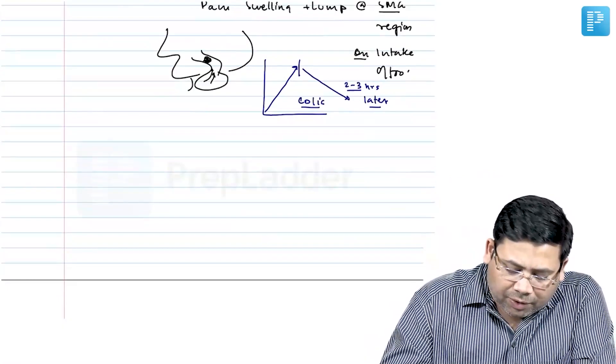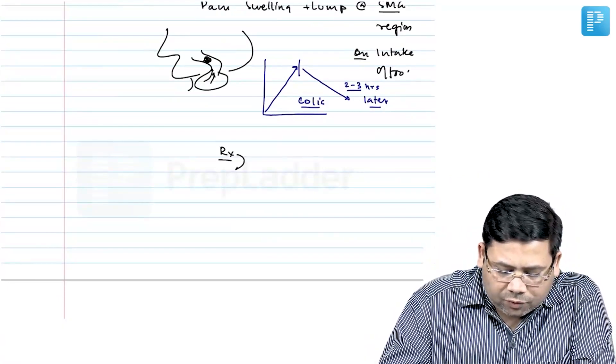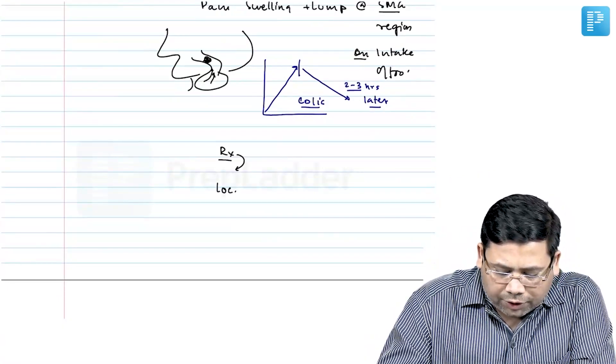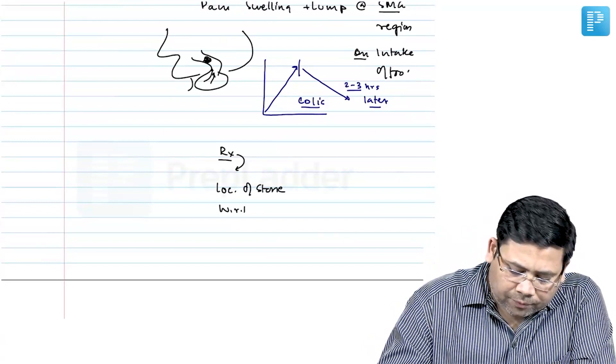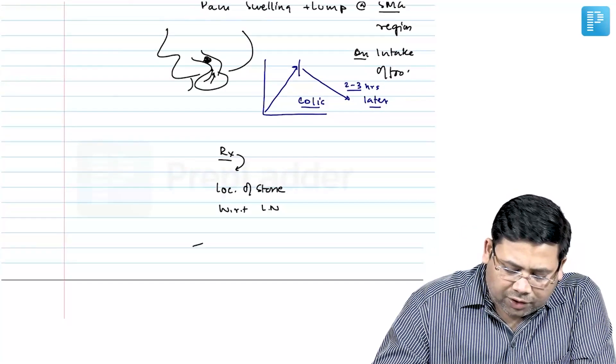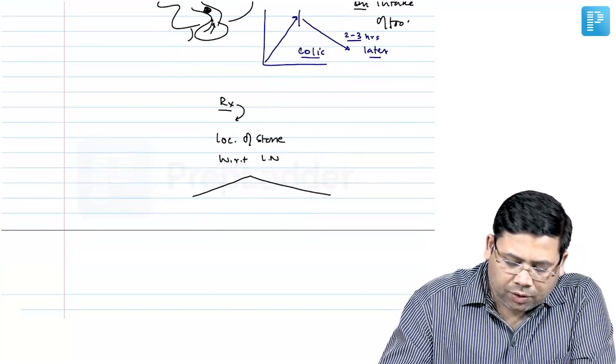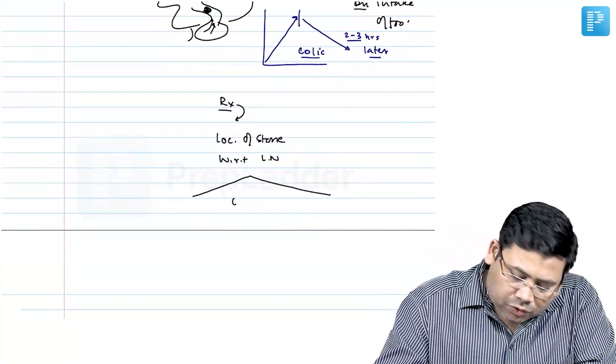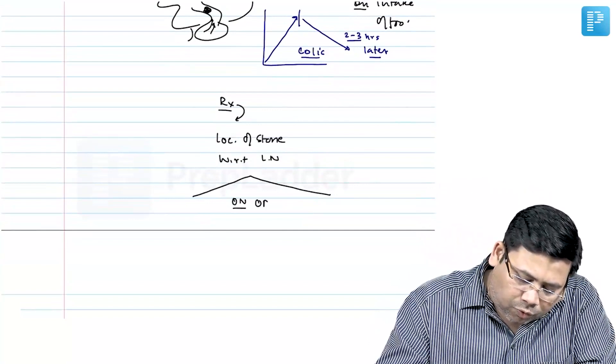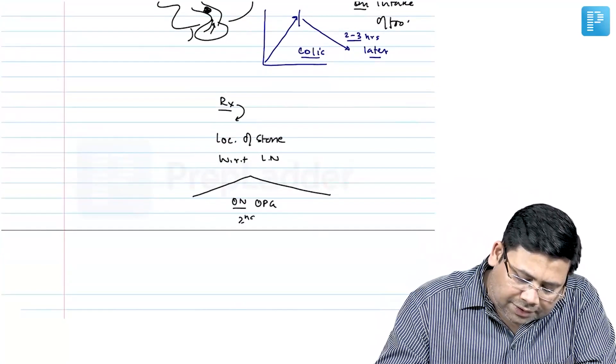When we talk about the treatment part, the first thing we have to understand is the location of stone with respect to lingual nerve. We want the position of the stone and how can you trace it? You can trace it with respect to the second molar. So on OPG, we look at the second molar.